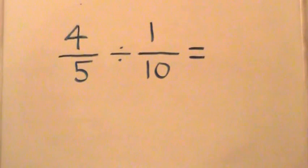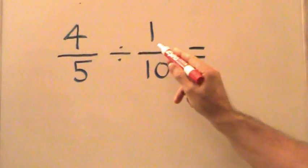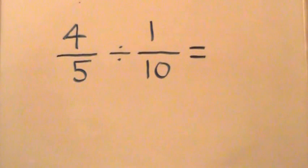In this video we're going to be dividing two proper fractions, four-fifths and one-tenth. Now there's no real division when we use fractions, so what we have to do is flip the second fraction and then multiply.